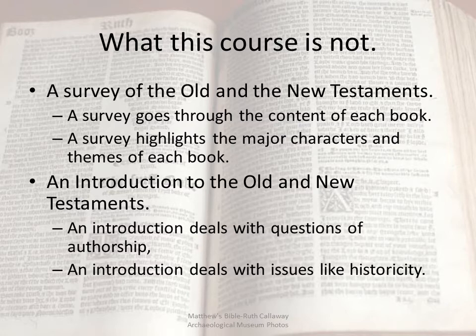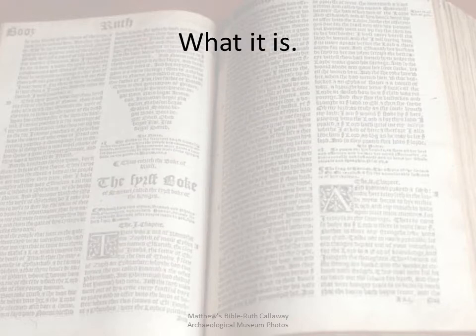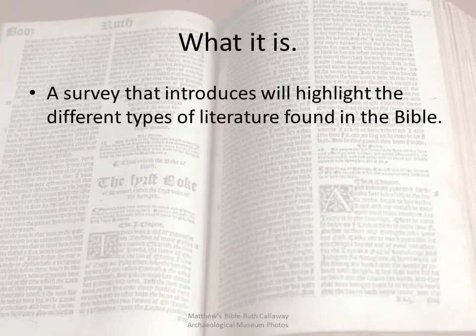Our focus will be on the Bible as a piece of literature. This course is designed to introduce you to the different types of literature found in the Bible. The Bible is not a monolithic work — it is an anthology of 66 different works composed over 1,500 years by some 30 acknowledged authors in three different languages. Each author wrote in a particular form or literary style called genre, suited for his own personal style and message.